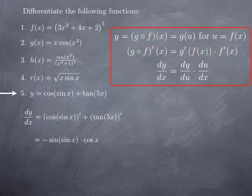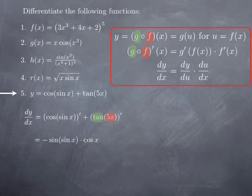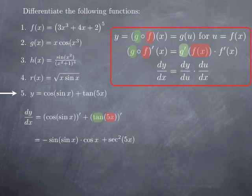Then we add the derivative of the second term, tangent of 5x. To form this, we plug 5x inside the tangent function, so we use the chain rule again. We get the derivative of the outside function — derivative of tangent is secant squared — evaluated at the inside function at 5x, giving secant squared of 5x. Then we multiply by the derivative of the function inside. In this case the function inside is 5x, and its derivative is just 5. So this is what we obtain.